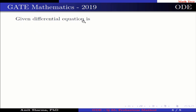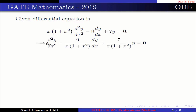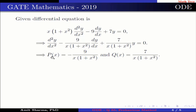The given differential equation is x(1 + x²) d²y/dx² − 9 dy/dx + 7y = 0, which implies p(x) = −9 / [x(1 + x²)] and q(x) = 7 / [x(1 + x²)], which implies x = 0 is a singular point.